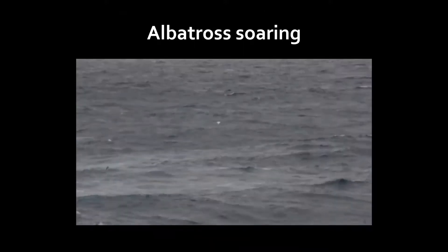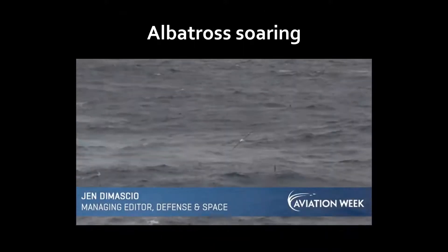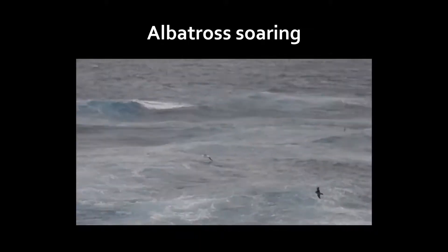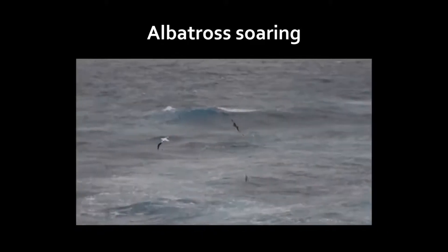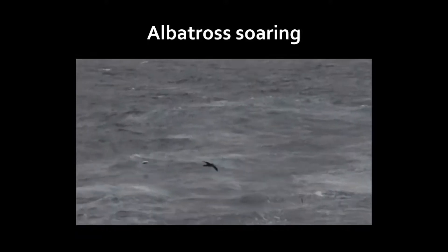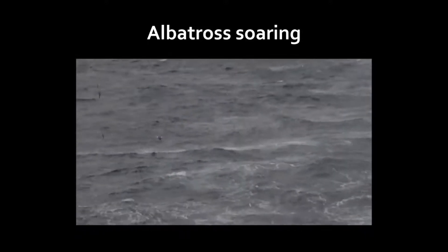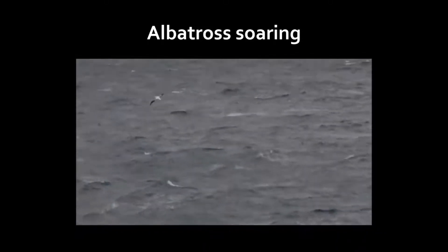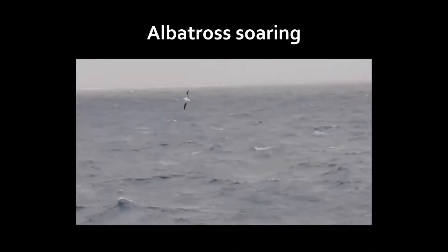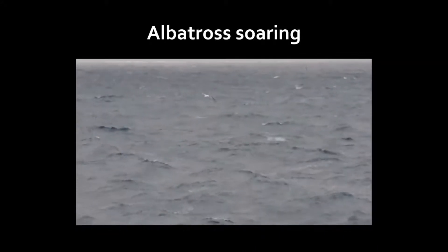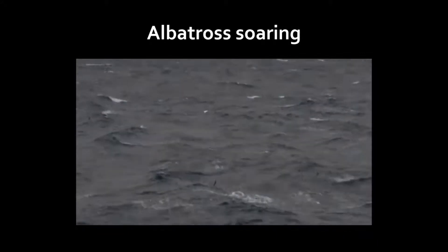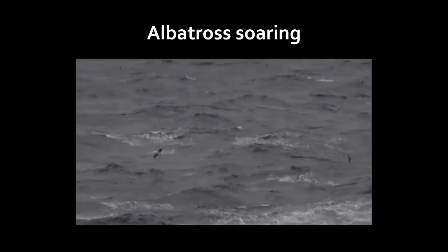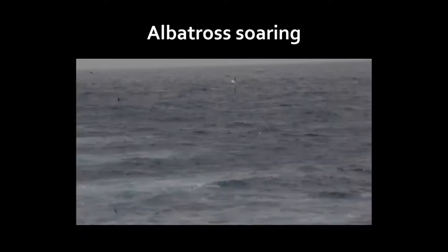In this video you can see an albatross, which is negotiating the winds close to the sea surface. Albatrosses can use air currents to fly without flapping the wings for several miles, and they therefore can save energy for long flights.